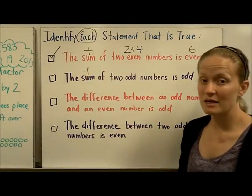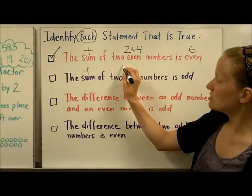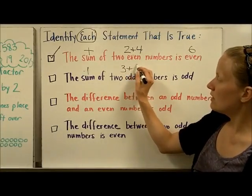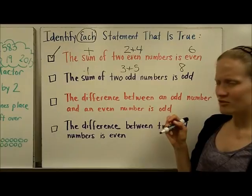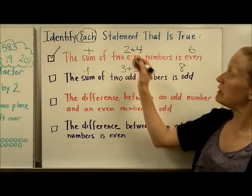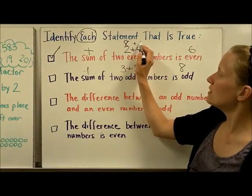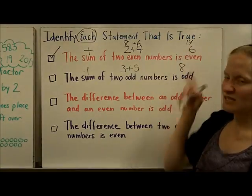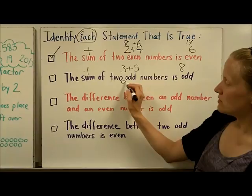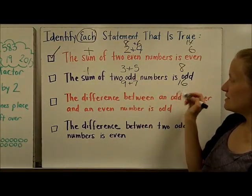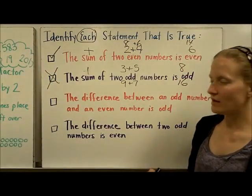The sum of two odd numbers is odd. Let's try 3 plus 5 — that makes 8, which is not odd. Let me do another: 9 plus 7 makes 16, also not odd. So this statement is not true — we would not select it. I also went back and verified the first statement: 8 plus 6 made 14, again an even number, which confirms the first conclusion.